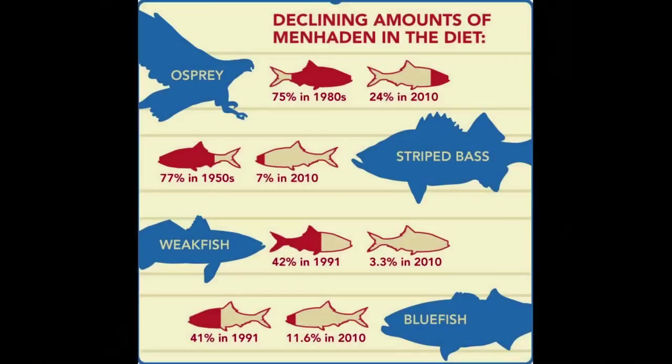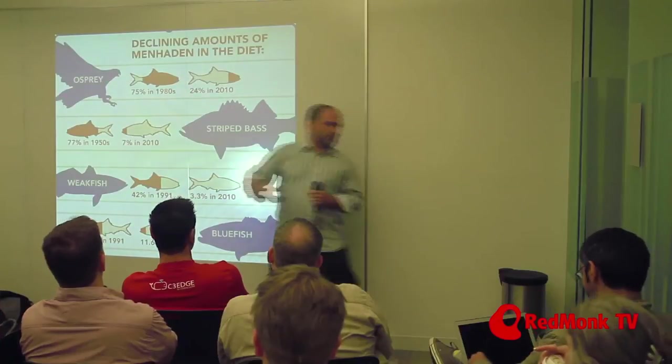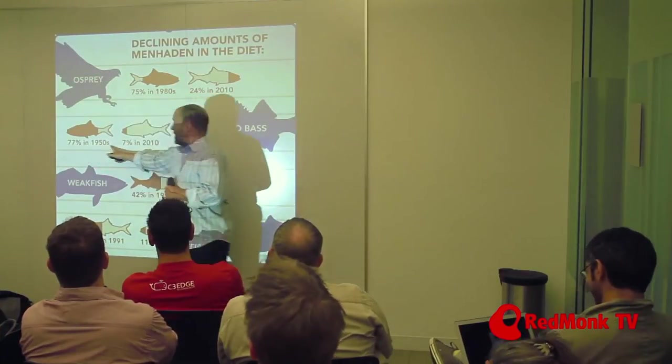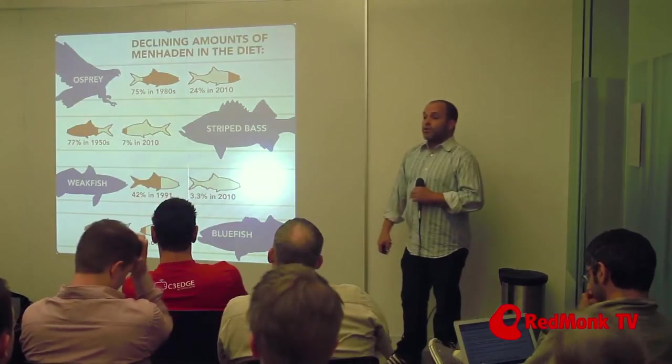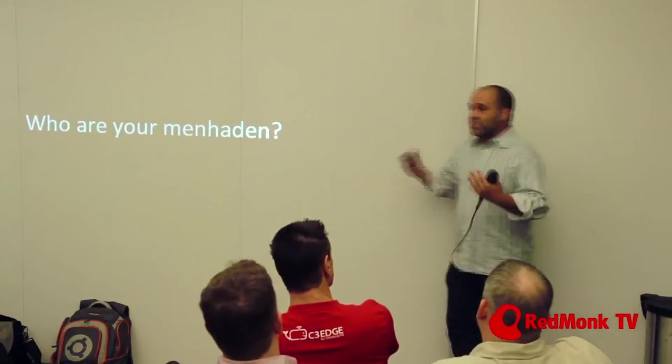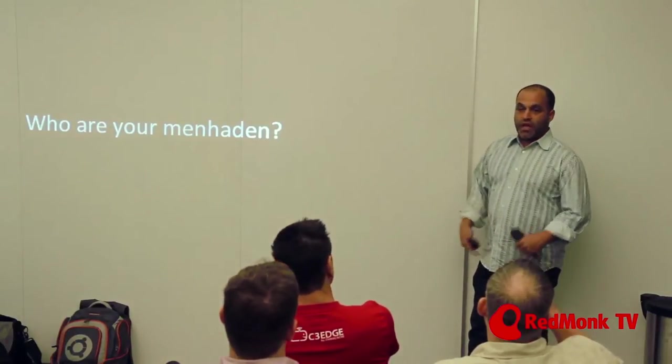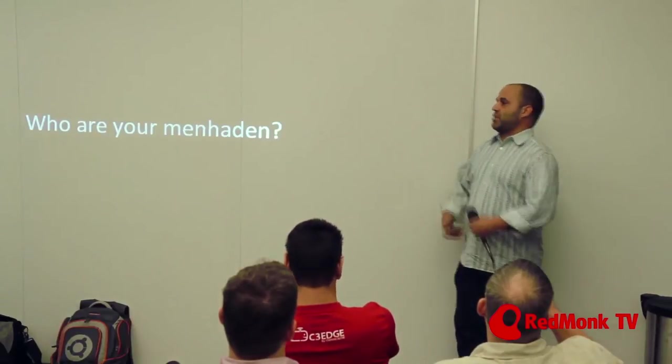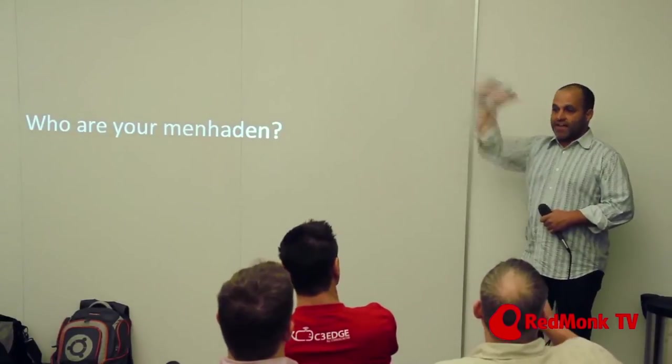So this is osprey. In the 1980s, it was 75% of the osprey diet. It is now 24%. We've fished it down so much. For striped bass, Steve, you know that fish, right? I do. Yeah. It was 77% in the 1950s. It's now down to 7% of their diet. And the same thing for weak fish and for blue fish, right? So the idea with these are these are who's your menhaden, right? So who are the pieces in your ecosystem that if you don't have those numbers, everything else falls apart as well, right? There are certain parts that you need to sustain the rest of the ecosystem. So maybe paying customers, straight up like that, right? It might be evangelists, external to your company. I need a lot of these because I really need the buzz going. But the question I'm asking you is who is your menhaden?